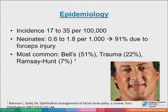Regarding epidemiology, the incidence is estimated at 17 to 35 per 100,000. It is also reported in neonates at 0.8 to 1.8 per 1,000, and 91% of these occur due to forceps injury. The most common etiology is Bell's palsy at almost half of cases. Others are traumatic at 22%, and 7% is caused by Ramsay Hunt. As a trivia, Sylvester Stallone was born with facial nerve palsy, which is why he sometimes sounds like he's mumbling or has slurred speech.